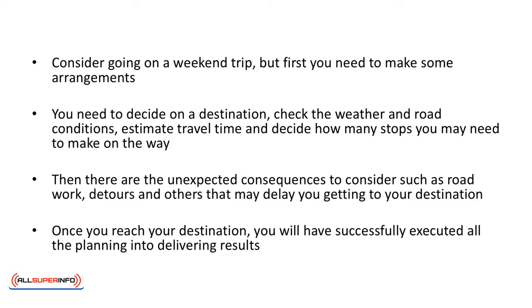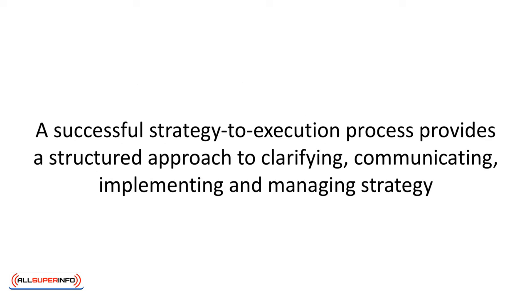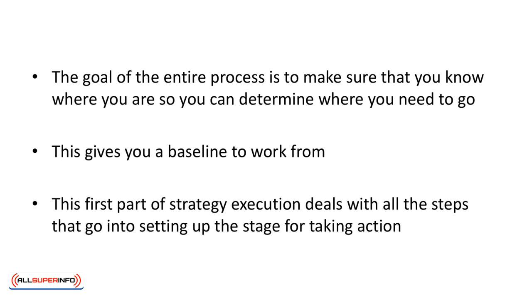Earlier on, we touched on the different steps of strategy to execution with a promise of more details to follow. Now we'll look at the topic in a little more detail explaining the step-by-step process. A successful strategy to execution process provides a structured approach to clarifying, communicating, implementing, and managing strategy. The goal of the entire process is to make sure that you know where you are so you can determine where you need to go, giving you a baseline to work from. The first part of strategy execution deals with all the steps that go into setting up the stage for taking action.